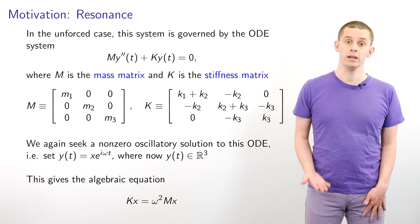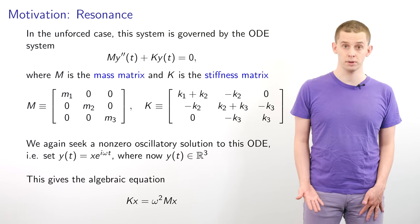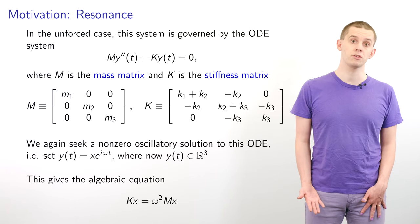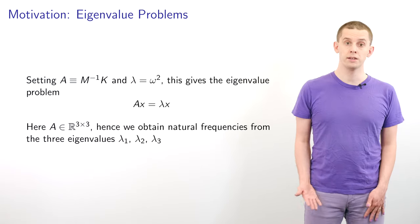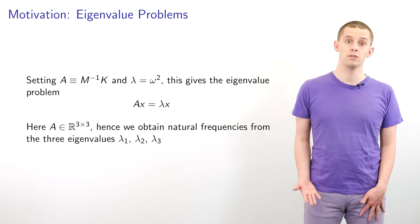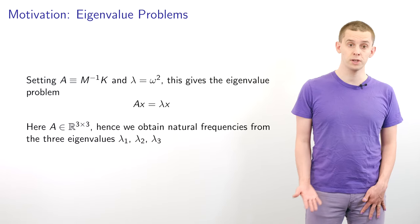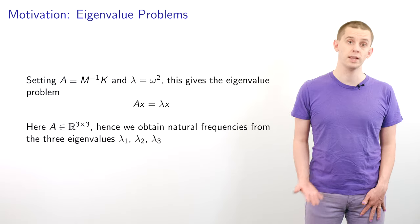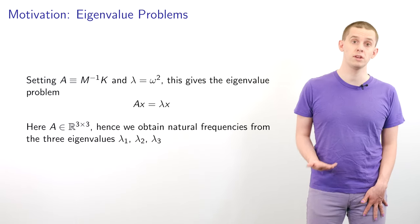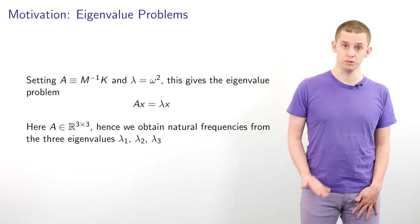We can seek a non-zero oscillatory solution to this ODE by putting y of t equal to x e to the i omega t, where x is a three-component vector. This gives us the algebraic equation K x equals omega squared M x. If we set A equal to M inverse K and lambda equal to omega squared, then this gives us an eigenvalue problem: A times x equals lambda x. Here A is a 3 by 3 matrix, and we can obtain the natural frequencies of our system from the three eigenvalues lambda_1, lambda_2, and lambda_3. So rather than just having a single natural frequency, our three-component system can have three different frequencies at which its components will oscillate.